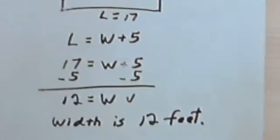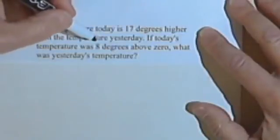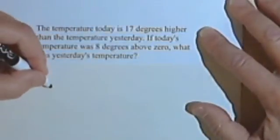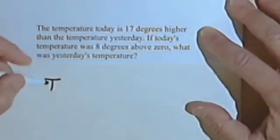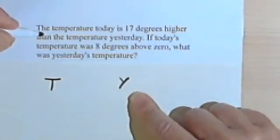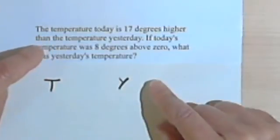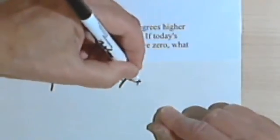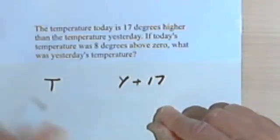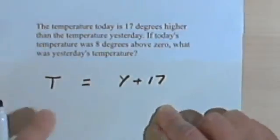Alright, one more. The temperature today is 17 degrees higher than the temperature yesterday. So we're comparing two things. We're comparing the temperature today, I'm going to use a T for today, and the temperature yesterday, I'll use a Y for yesterday. And it says that the temperature today is 17 degrees higher than the temperature yesterday. So if I add 17 to yesterday's temperature, I should get today's temperature. So now I've got an equation.